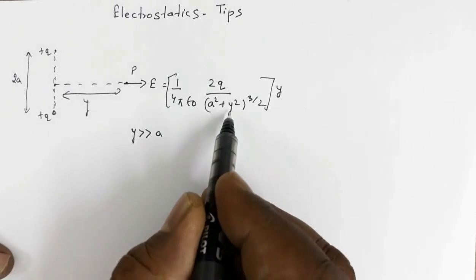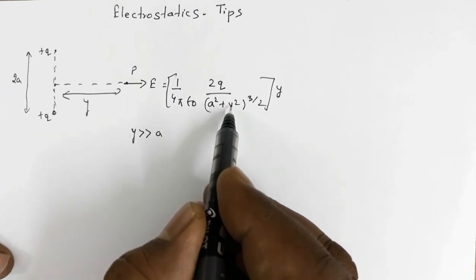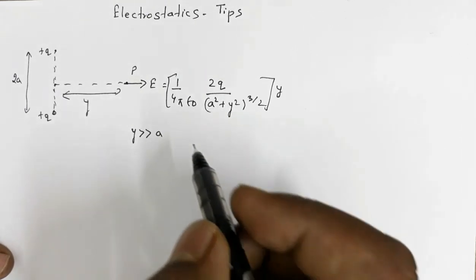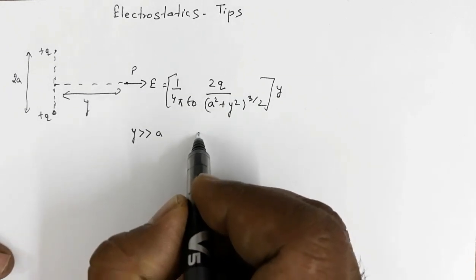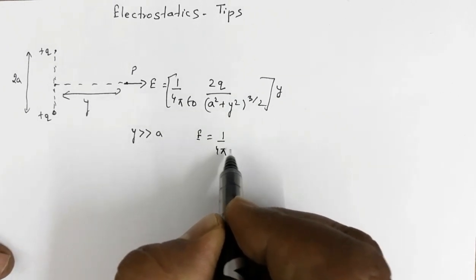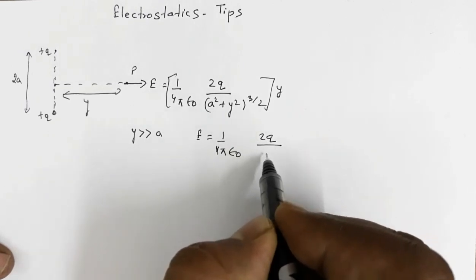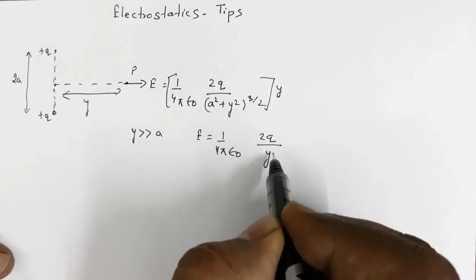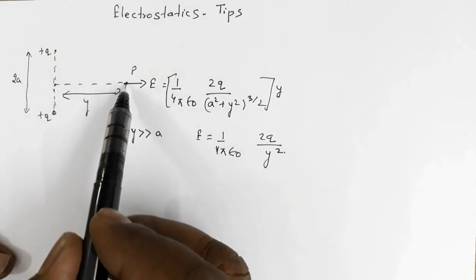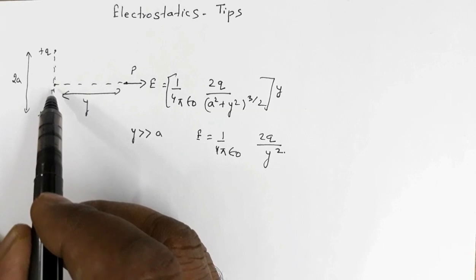...when y >> a, then a² + y² is replaced by y², so this expression becomes E = (1/4πε₀) × 2q/y². That is, if point P is very far away, then these two charges will behave like a single charge 2q placed at distance y.